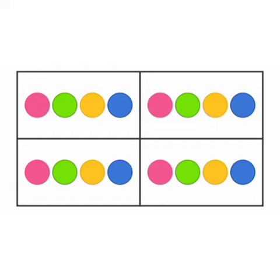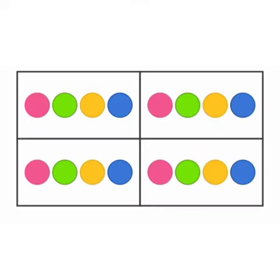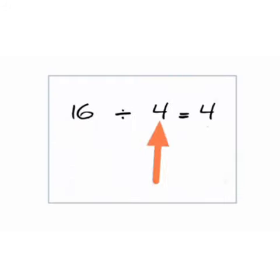4 balls should be kept in each box. In a division, the dividend is the number that is being divided in the division process. The divisor is the number by which the dividend is being divided. The quotient is the result obtained in the division process. So in the above example where we divide 16 balls into 4 equal groups, the dividend is 16, the divisor is 4, and the quotient is 4.